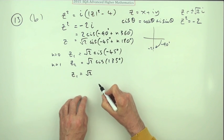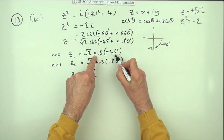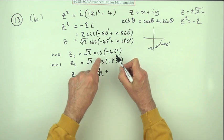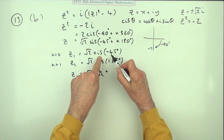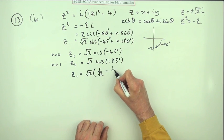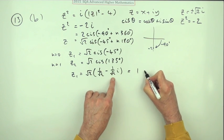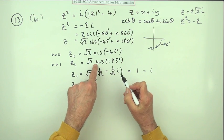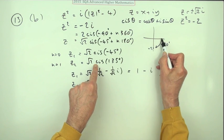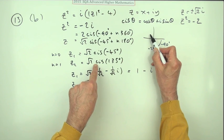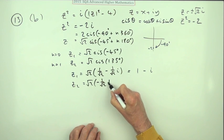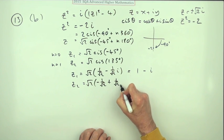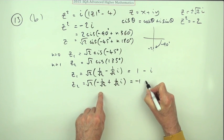Spelling it out: z₁ = root 2 times (cos(−45°) + i·sin(−45°)). cos(−45°) equals cos(45°) = 1/root 2, and sin(−45°) = −1/root 2, so z₁ = root 2 × (1/root 2 − i/root 2) = 1 − i. For z₂: cos(135°) is in the second quadrant so it's −1/root 2, and sin(135°) is positive so +1/root 2, giving z₂ = root 2 × (−1/root 2 + i/root 2) = −1 + i.